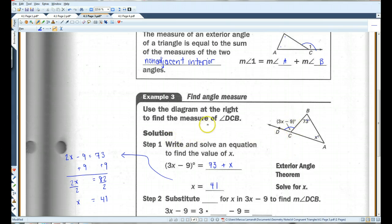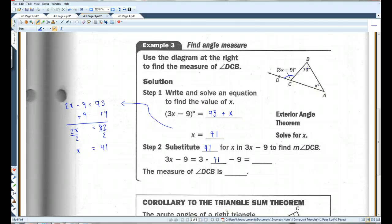But, we're not done yet. They don't ask for x. They ask for the measure of DCB. So, we've got to plug it in. I'm going to substitute 41 for x and 3x minus 9 to find the measure of angle DCB. So, when I plug this in, I get 3 times 41 minus 9. If you can do that in your head, great. If not, no worries. 41 times 3, 123 minus 9, 114. So, the measure of angle DCB is 114 degrees.